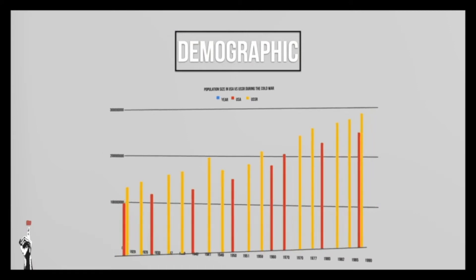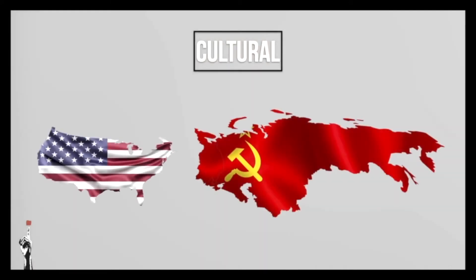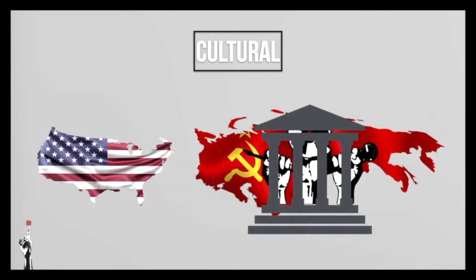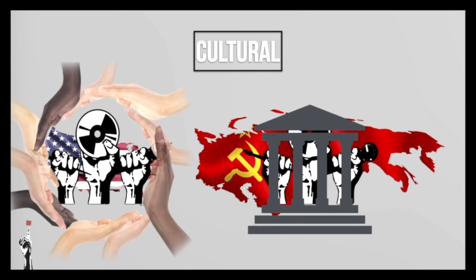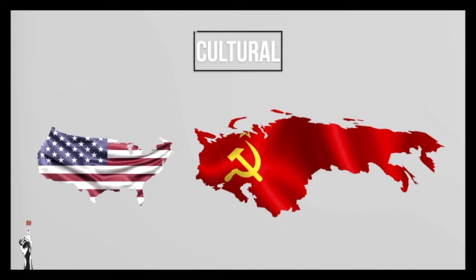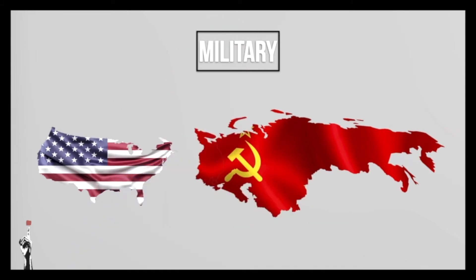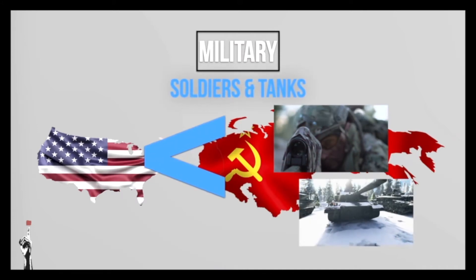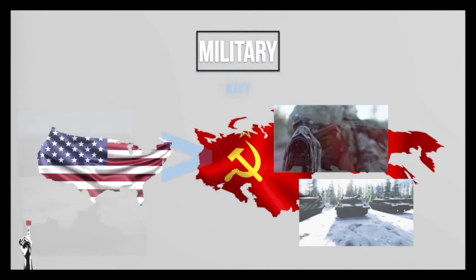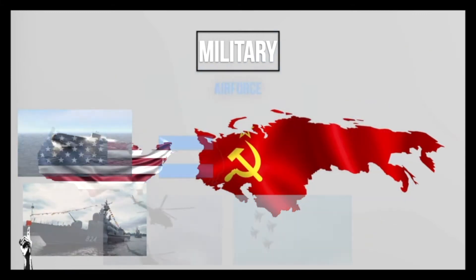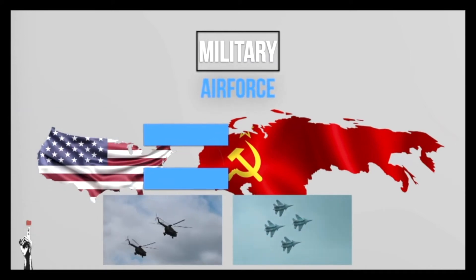Culturally, the Soviet Union suppressed the freedom of speech and controlled the media, while the USA protects the freedom of speech and also the freedom of media. Now let's move to their militaries. The military is very important in the context of the cold war. During the cold war, the military power fluctuated between the two nations over 40 years. In terms of soldiers and tanks, Russia had a huge numerical advantage. The USA dominated the oceans with their large fleet. In terms of the air force, both parties were more or less on the same level.